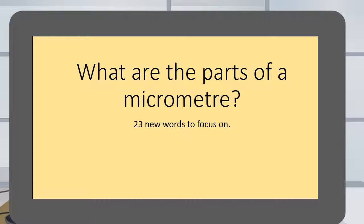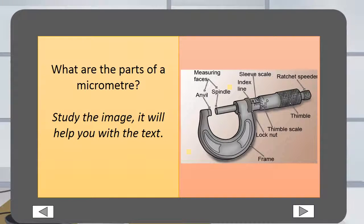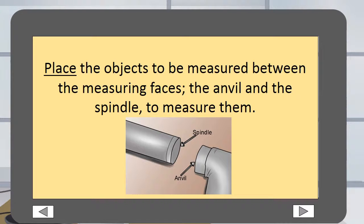What are the parts of a micrometer? Study the image until you are confident you know each of the parts. It will help you with the next text. Place the objects to be measured between the measuring faces, the anvil and the spindle, to measure them.